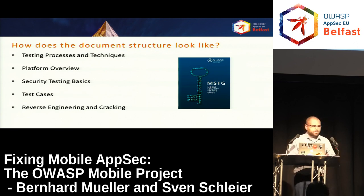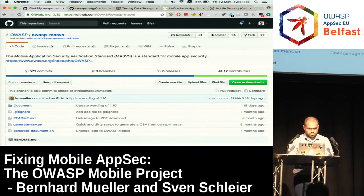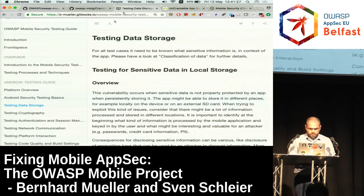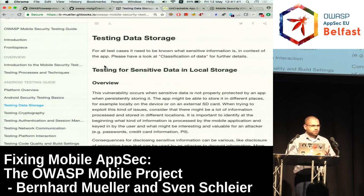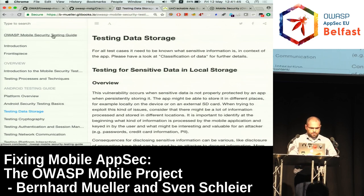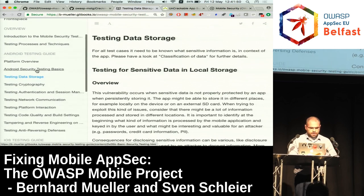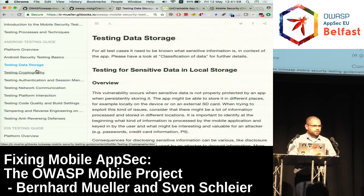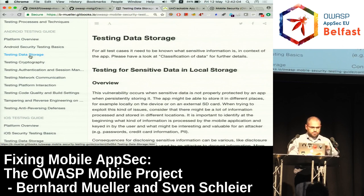The test cases are the most interesting part of the MSTG because they describe in detail how a tester can verify the MASVS requirements. The MSTG and Mobile Security Testing Guide is all hosted on GitHub. We're doing everything in Markdown and chain it together with GitBook, so we already have a readable book available online. The table of contents on the left shows the testing processes and techniques, and then split into an Android testing guide and an iOS testing guide — both with the same structure, covering platform overview, security testing basics, and then testing areas like data storage and cryptography, all mapping to MASVS.